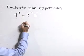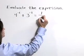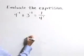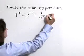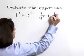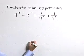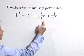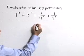4 to the negative 1 is equivalent to 1 over 4 to the positive 1. And 3 to the negative 1 is equivalent to 1 over 3 to the positive 1. So this becomes 1 fourth plus 1 third.